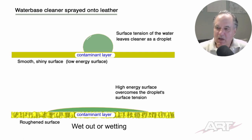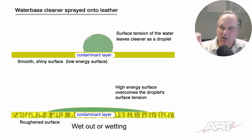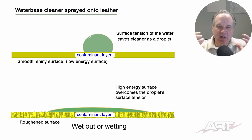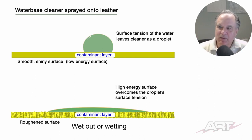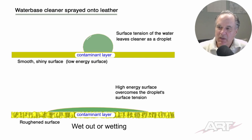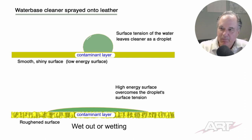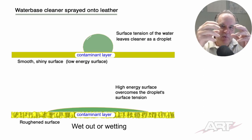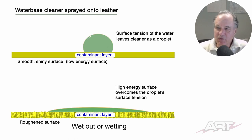Why does the water bead up? It's because of a thing called surface tension — it's the energy, the attraction of the water molecules that want to keep it from flowing out. Given the chance, water will stay a droplet. It's true that the degreaser itself wants to pull that droplet apart, but it may not be enough. The surface tension of water is very strong.